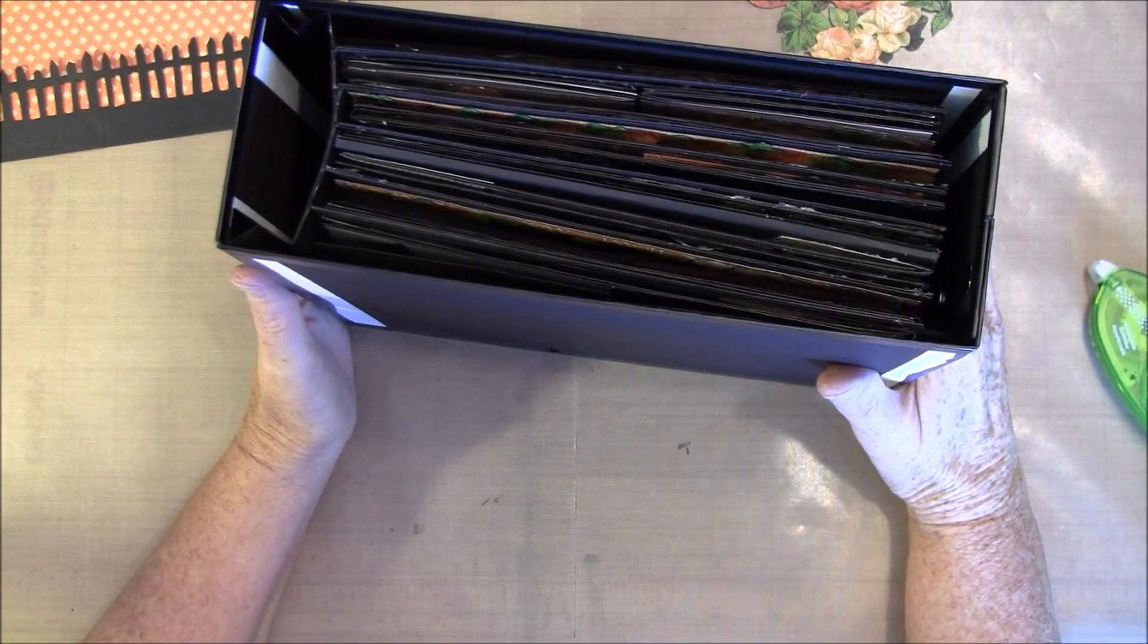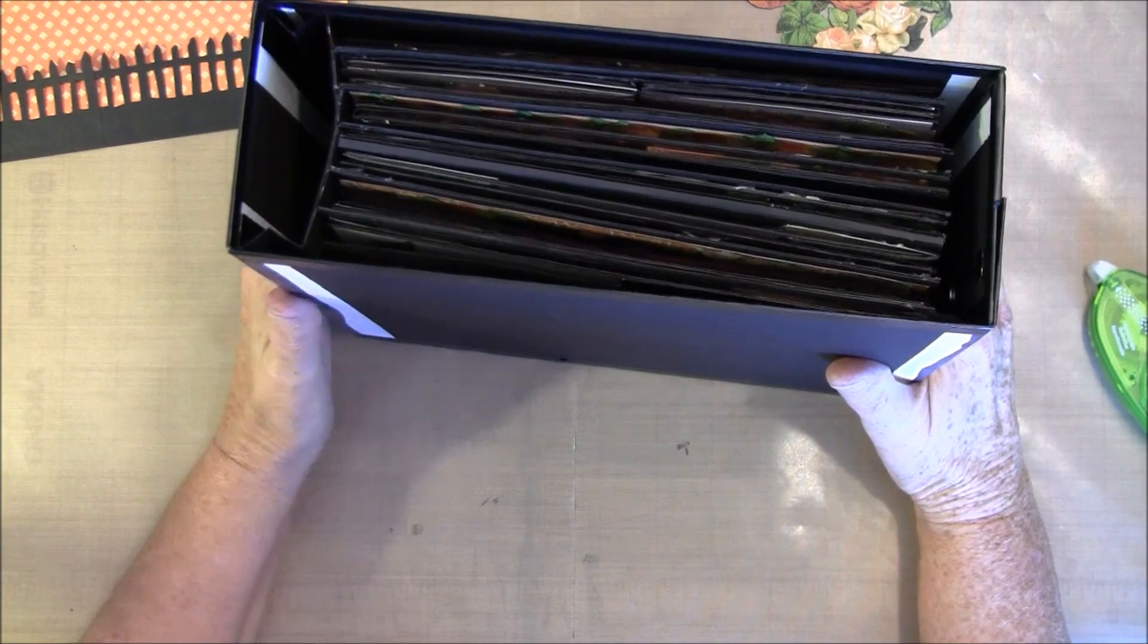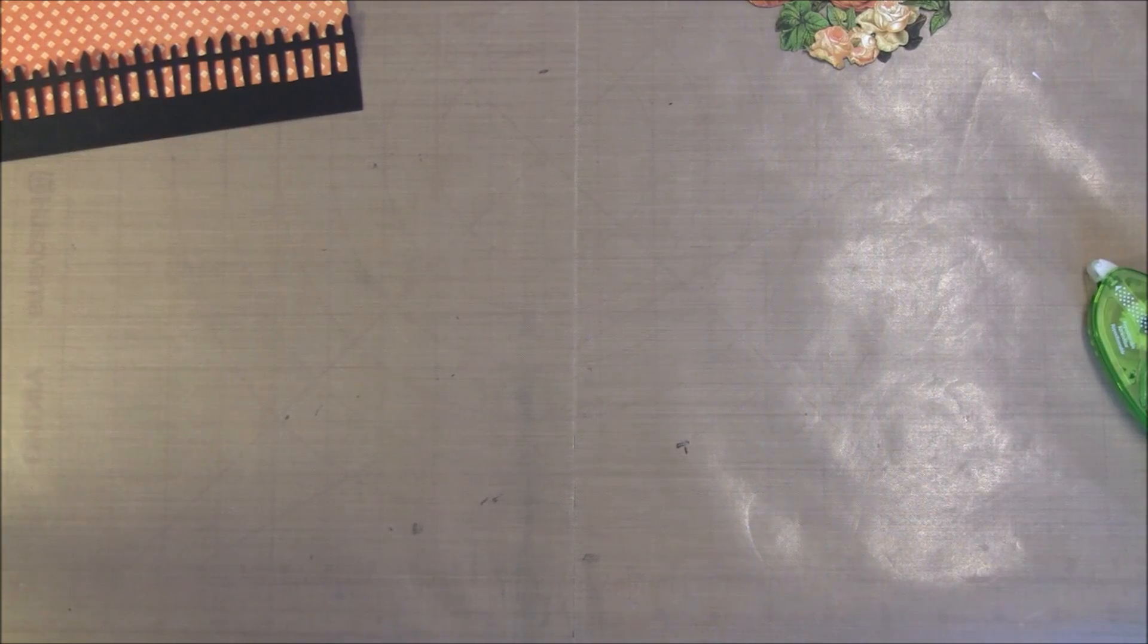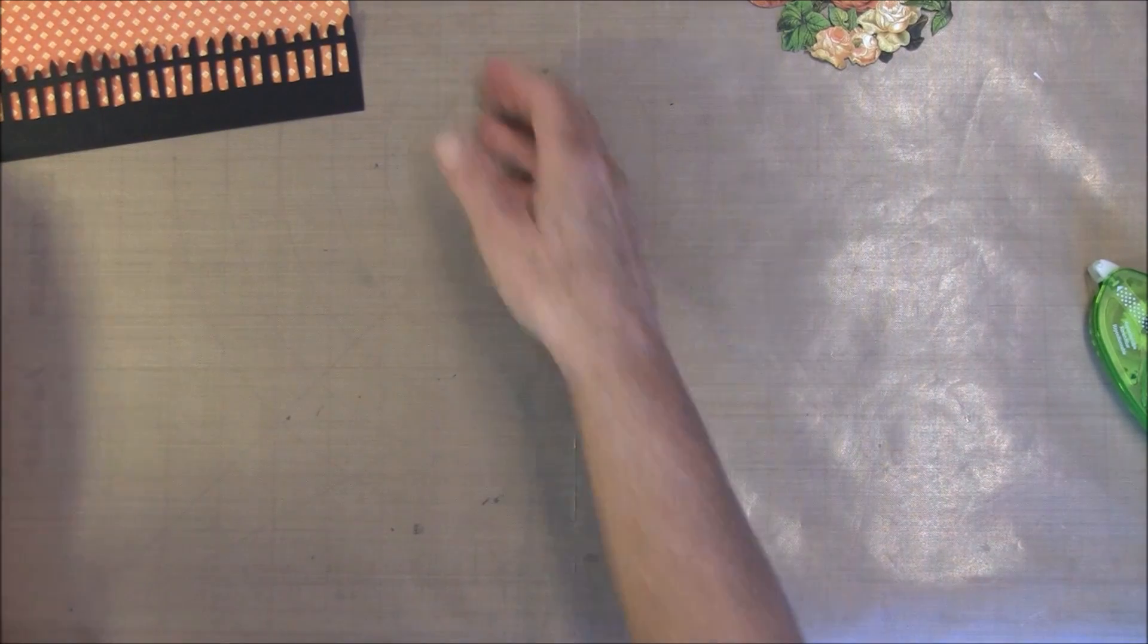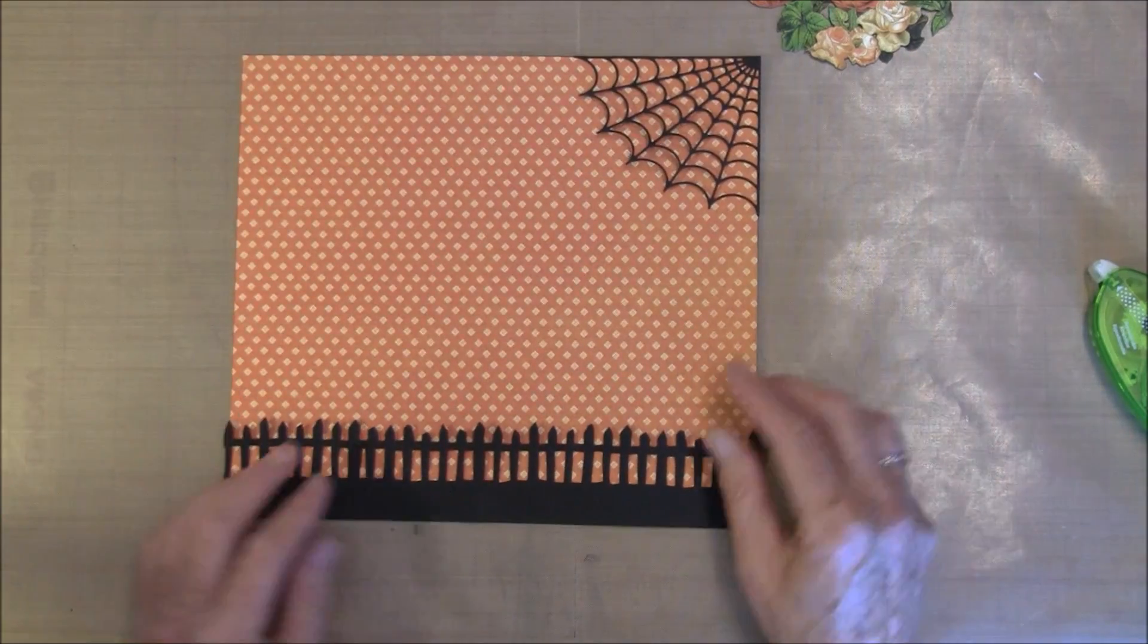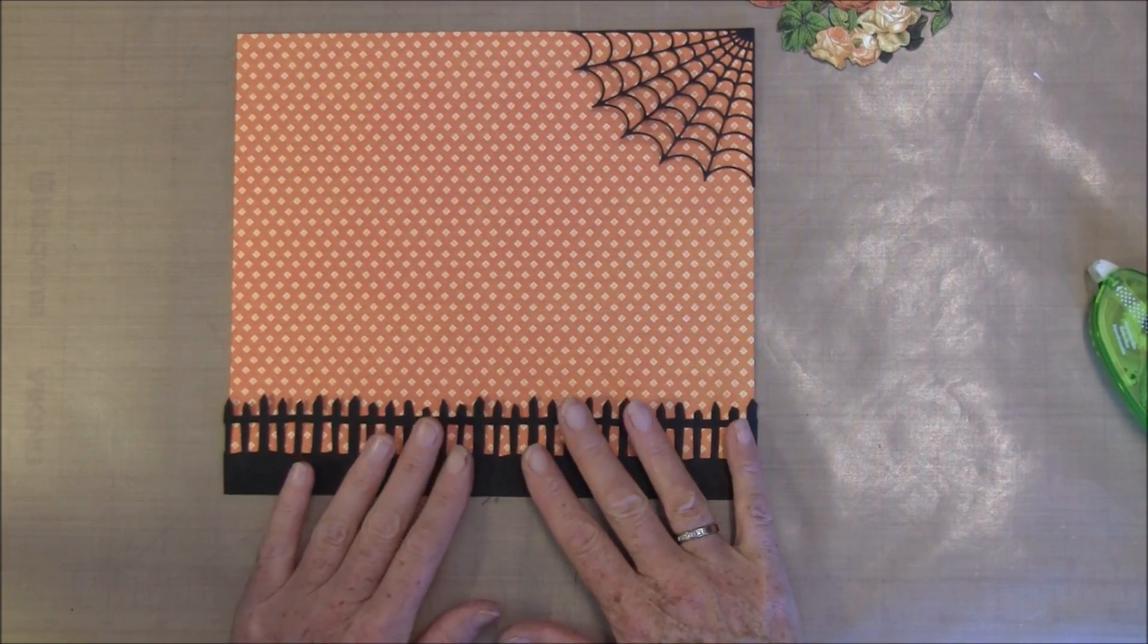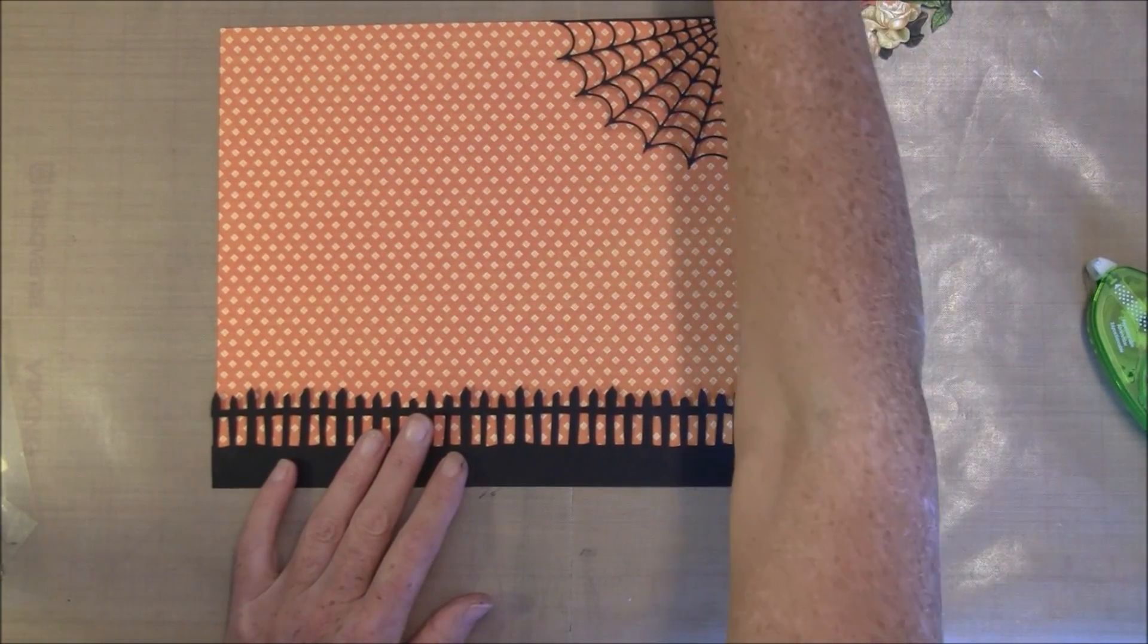So then we can start with the inside cover, but I will take this out of the way because it's more easy here to work with just the paper. So here I cut the paper to size and then we are going to decorate it a bit.